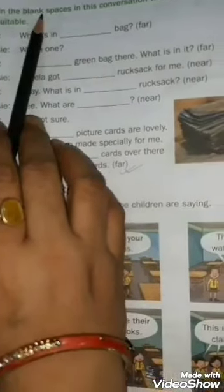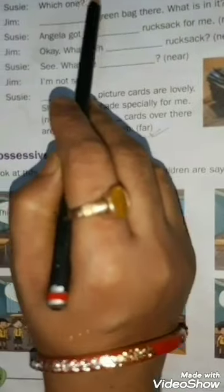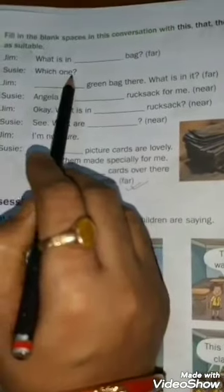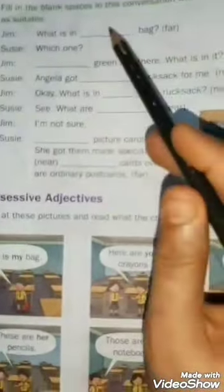Now come to question C. Fill in the blanks in this conversation with this, that, these, or those where suitable. For example, Jim asks 'What is in that bag?' — the bracket says 'far.' Susie replies 'Which one?' Jim says 'That green bag there. What is in it?' — again far. You have to figure out whether to use this, that, these, or those. Do it yourself, and if you find any problem, please ask me.